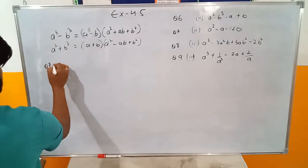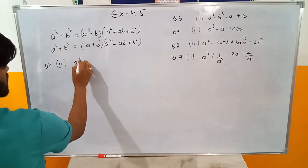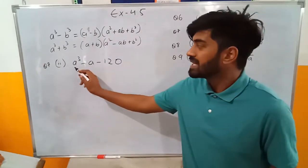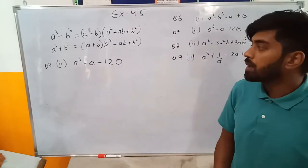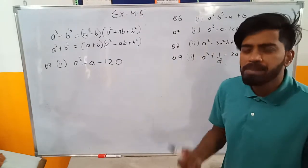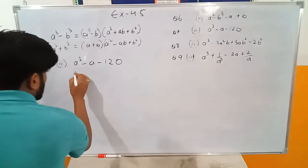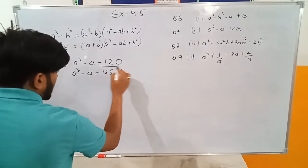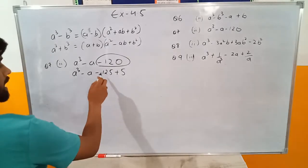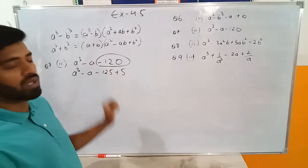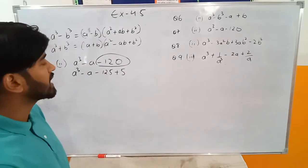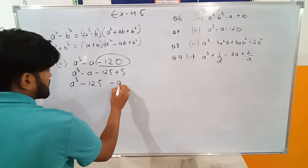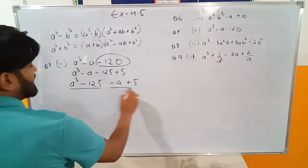Question number seven, second part: a cube minus a minus 120. This is interesting because I can see a cube but there is no b cube. So I have to make a b cube. I will break minus 120 as minus 125 plus 5, and pair them: a cube minus 125, and minus a plus 5.